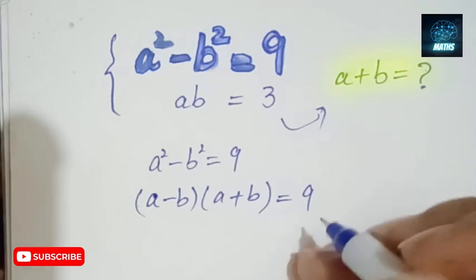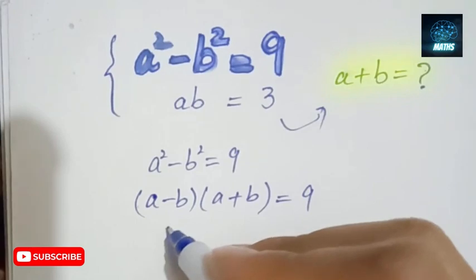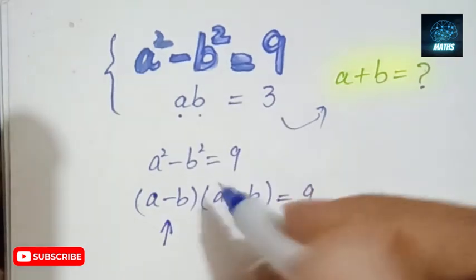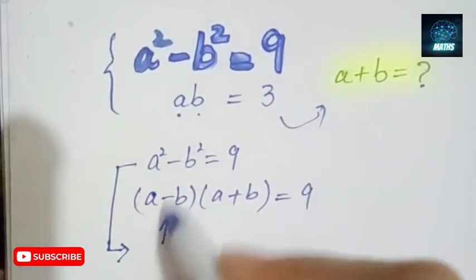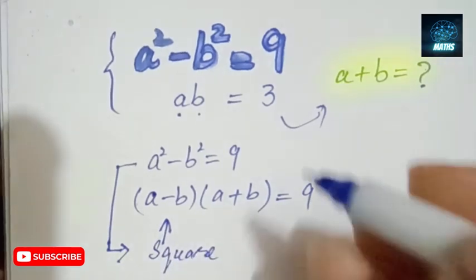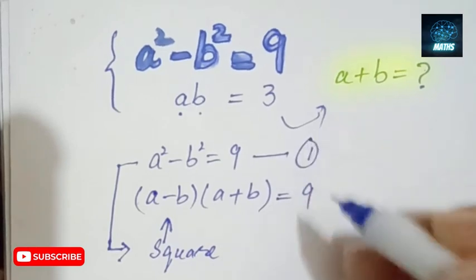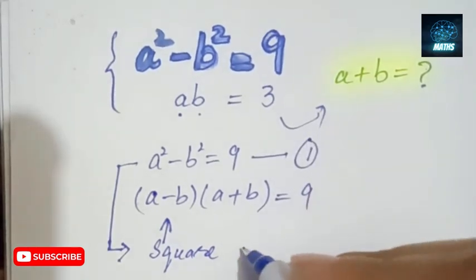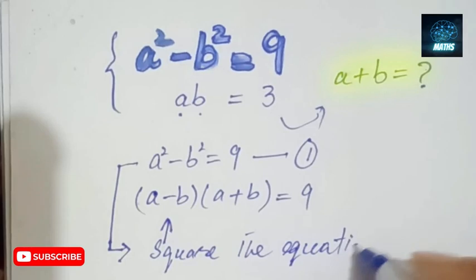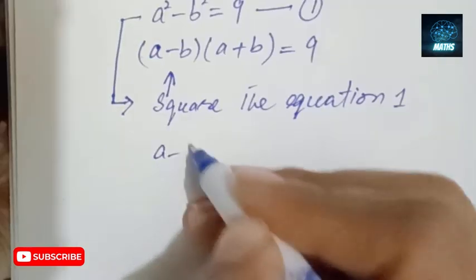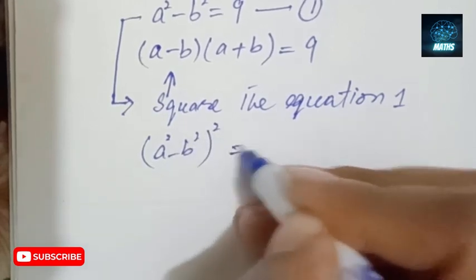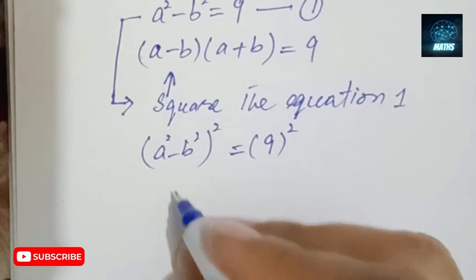The main issue is that here we don't have the value of a minus b — we only have the value of ab, which equals 3. So what we can do is square this term. I'm going to take this equation and name it equation one. So squaring both sides: (a² minus b²)² equals 9² — that is, (a minus b)² times (a plus b)² equals 81.